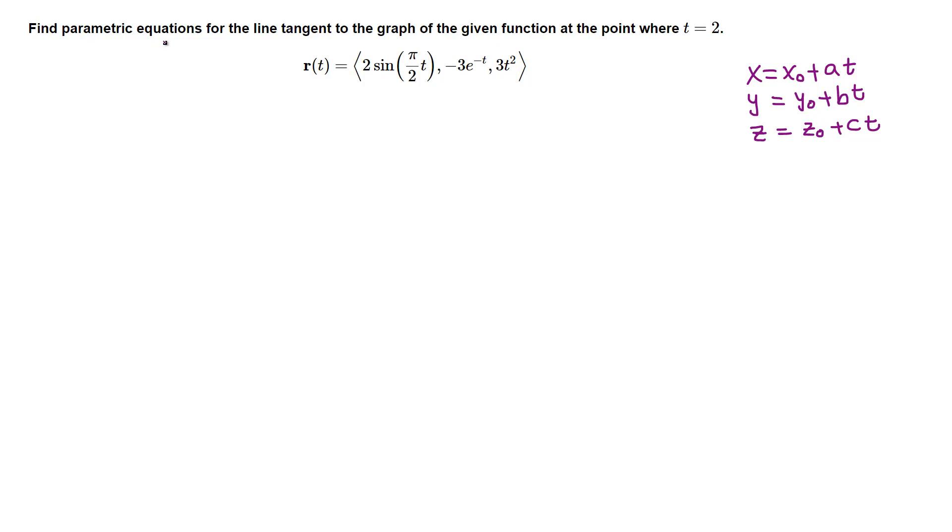Find parametric equations for the line tangent to the graph of the given function at the point. We are asked to find parametric equations of a line. The equations are given here: x = x₀ + at, and so on. We need a point and a direction vector ABC for the tangent line.